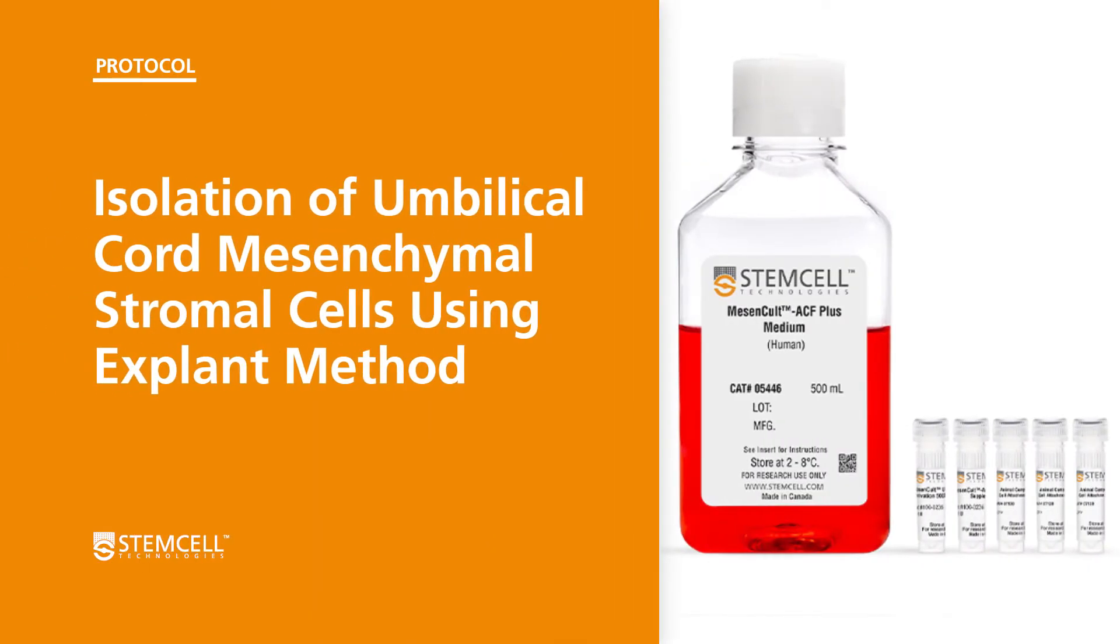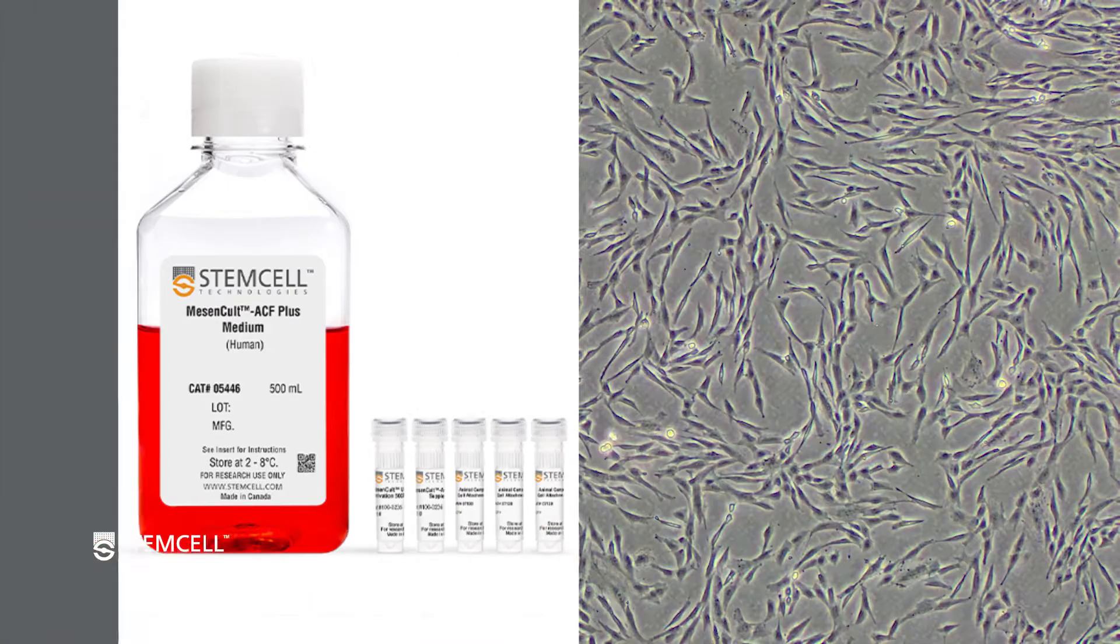In this technical video, we will guide you through the protocol for isolating mesenchymal stromal cells, also known as MSCs, from fresh human umbilical cord tissue using the explant method and the MesenCult ACF Plus Umbilical Cord Culture Kit. Following this step-by-step protocol will ensure that you are able to generate the highest yield of MSCs from your cord tissue sample.